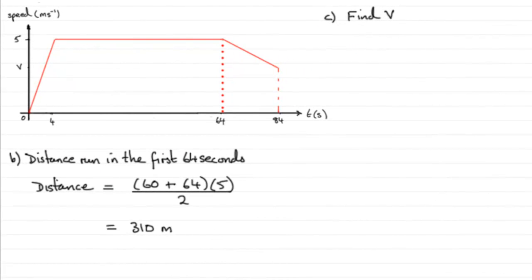Now in part C we're asked to work out the value of V, find V. To do this, what we should know now is that the area under the whole graph represents the total distance covered, and we know that distance was 400 meters.